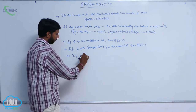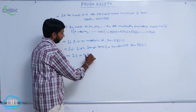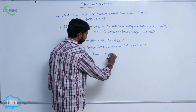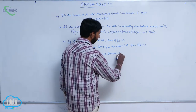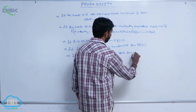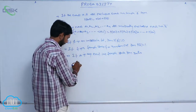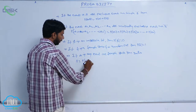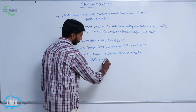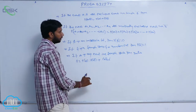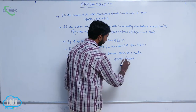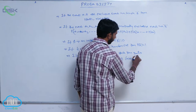If A is any event in a sample space, then the ratio P(A) to P(Ā) is called odds in favor of A.